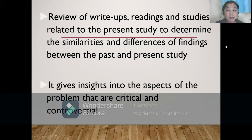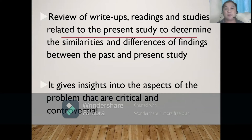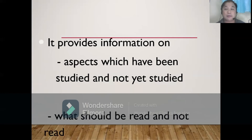The review of related literature consists of review of write-ups, readings, and studies related to the present study. It also helps to determine the similarities and differences of findings between the past and present study.